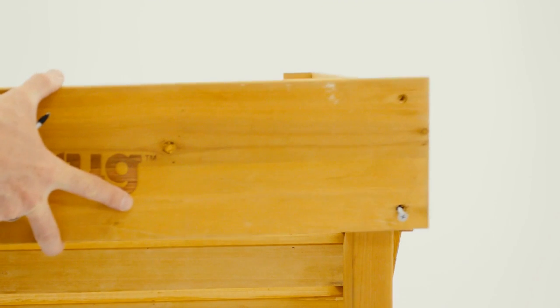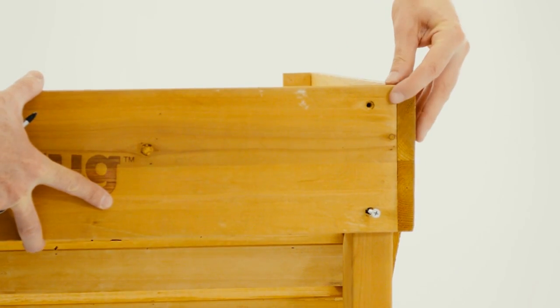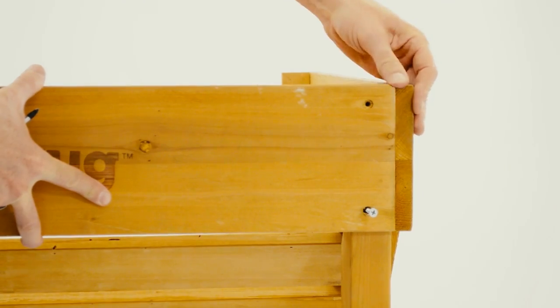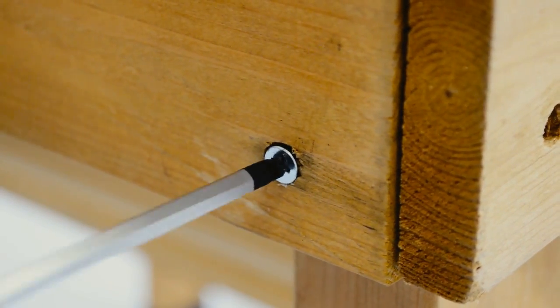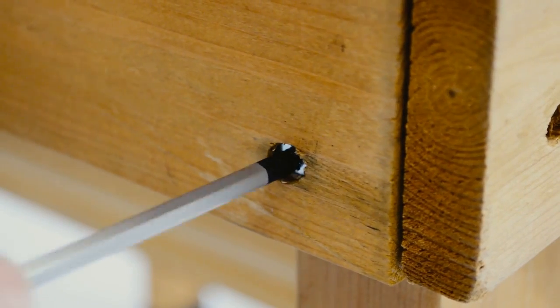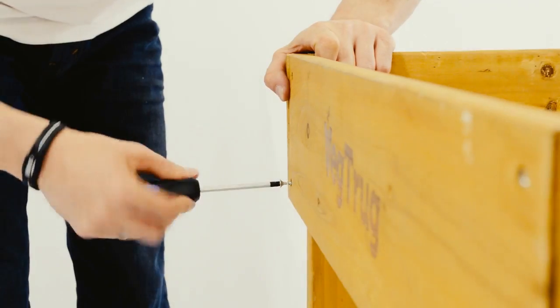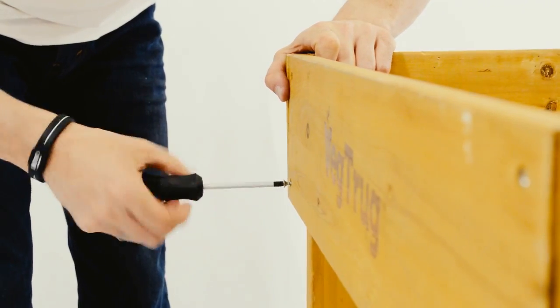Now take the VegTruck branded face board and mount it to the front like so. Screw the four screws into the pre-drilled holes. The non-branded but equally sized backboard can now be fitted on the opposite side in exactly the same way.